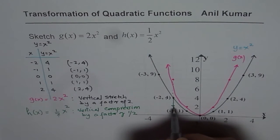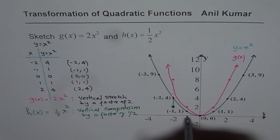So this point moves downwards to 2. The point at minus 1, 1 will move at half.